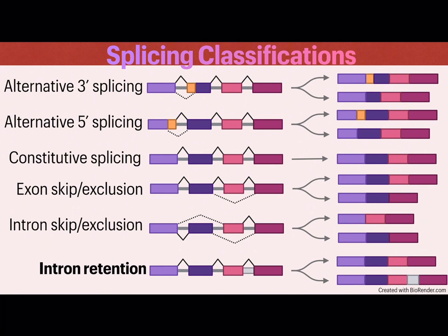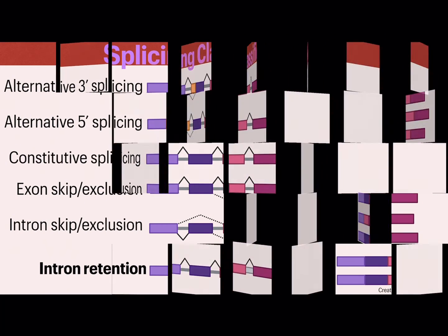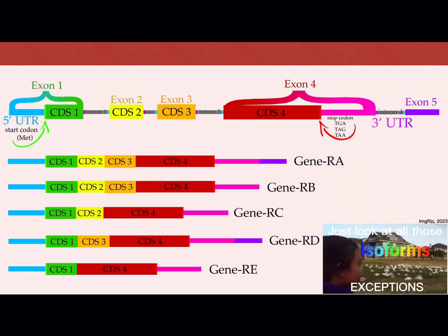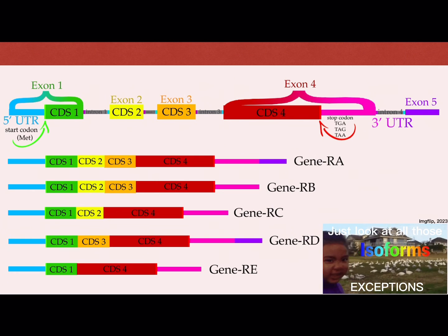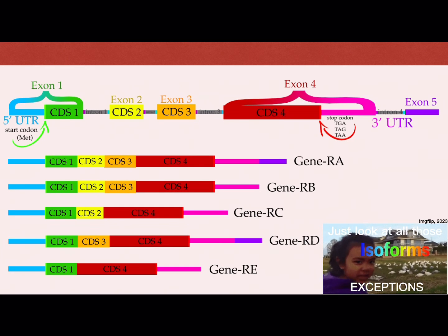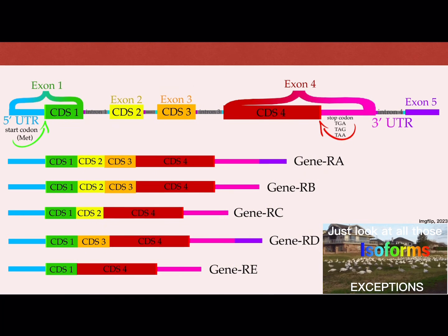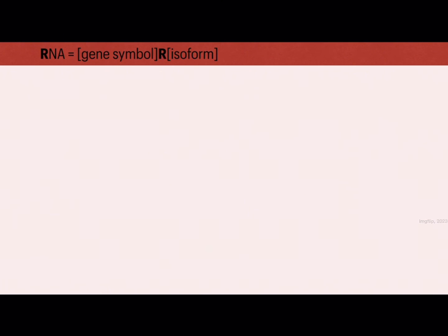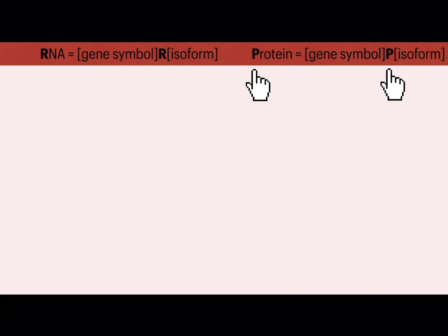Doing things out of the ordinary can yield extraordinary results — like isoforms! This one sequence of DNA is capable of producing five different versions of the same gene, isoforms A through E. When there is enough evidence to support an alternate transcript being produced, that is when we call it an isoform of that gene. Transcripts will be referred to by their gene symbol followed by R and then the isoform, while the protein will be referred to by the same but with a P for protein instead of R for RNA.